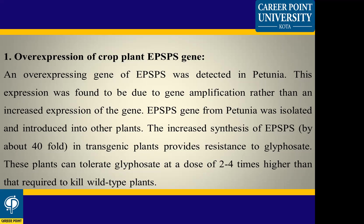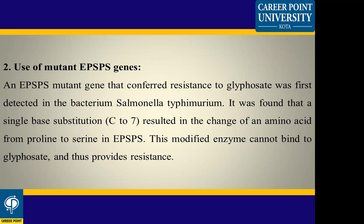Over-expression of EPSPS was first detected in petunia, and this was found to be due to gene amplification rather than increased expression. The EPSPS gene from petunia was isolated and introduced into other plants. This synthesis of EPSPS protein allows the plant to tolerate glyphosate at 2 to 3 times higher levels.